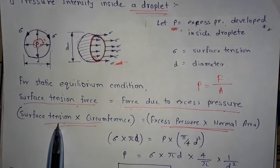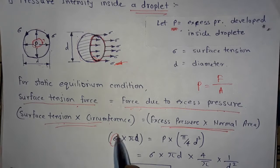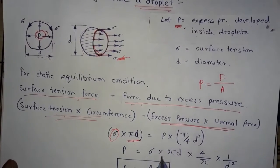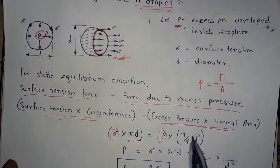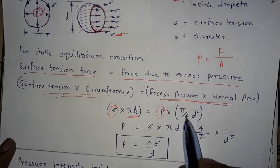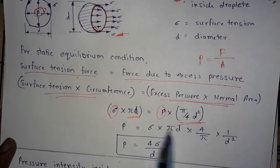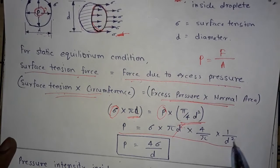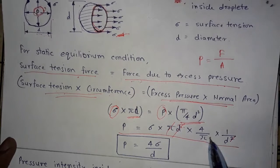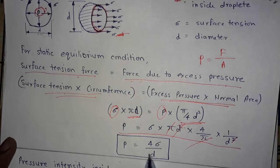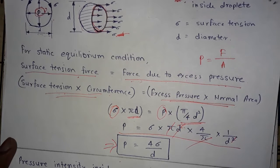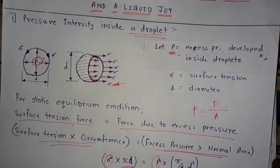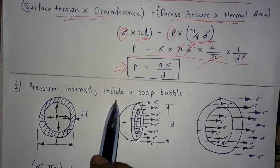Setting surface tension force equal to force due to excess pressure: surface tension σ multiplied by circumference πd equals excess pressure P multiplied by normal area πd²/4. Cancelling d and π from both sides, we get P = 4σ/d. This is the equation for excess pressure developed inside a liquid droplet.